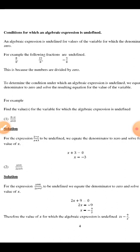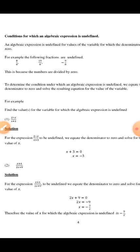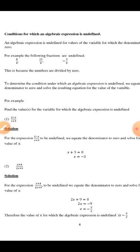The conditions for which an algebraic expression is undefined: an algebraic expression is undefined for values of the variable for which the denominator is zero. For example, fractions like 19 over 0 or negative 9 over 0 are undefined because the numbers are divided by zero. To determine when an expression is undefined, equate the denominator to zero and solve the resulting equation for the values of the variable.